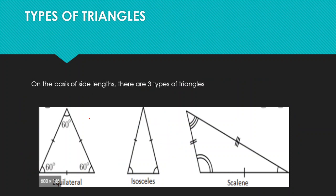Based on side lengths, we have three types of triangles. An equilateral triangle has all three sides equal. Since all three sides are equal, all three angles are also equal, and since the angle sum is 180 degrees, every angle is 60 degrees.